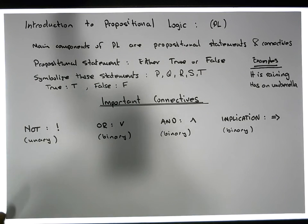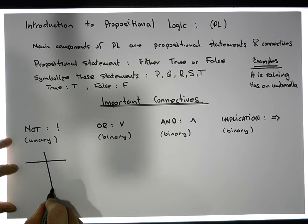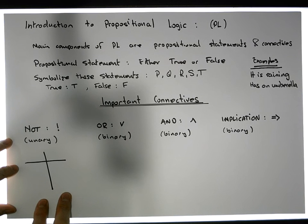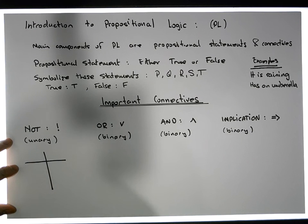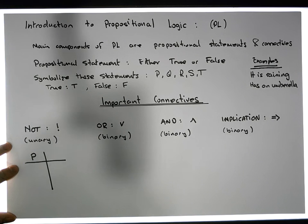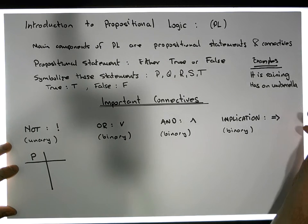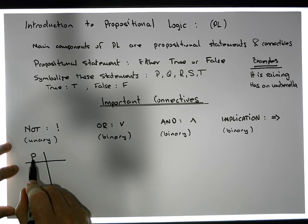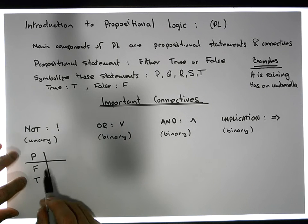So how do these connectives work when we apply them to particular propositions? The way we're going to understand them is through what's known as a truth table. A truth table is just a table with two columns — a left-hand part and a right-hand part. What's listed on the left-hand part are the propositions that the operator is going to be applied to.